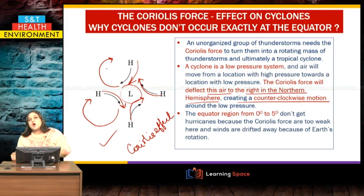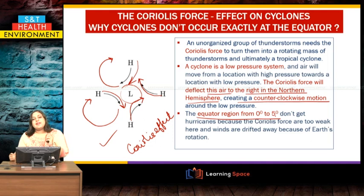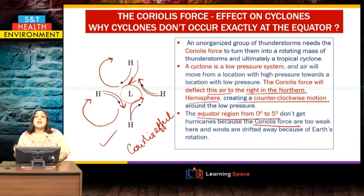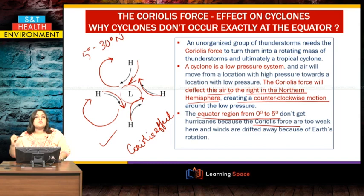In the Southern Hemisphere, the opposite rotation occurs. The equatorial region from 0 to 5 degrees north and south is spared of cyclones because the Coriolis force is so weak there that no rotation of winds occurs. That is why tropical cyclones are found between 5 to 30 degrees north and 5 to 30 degrees south.